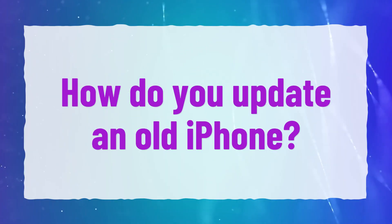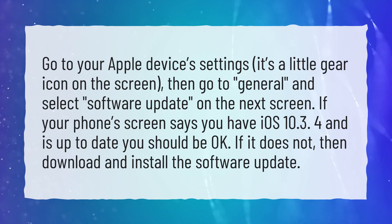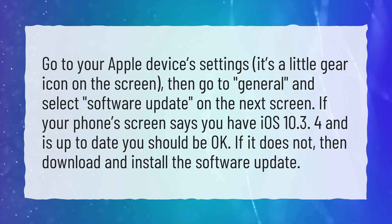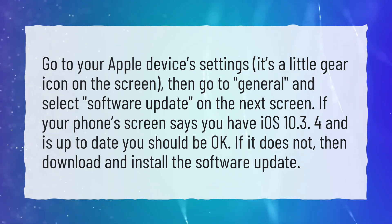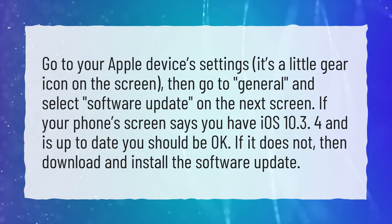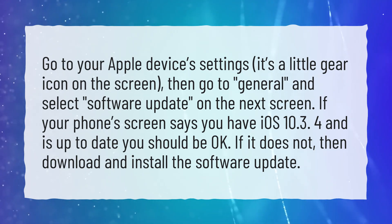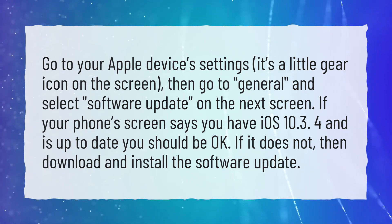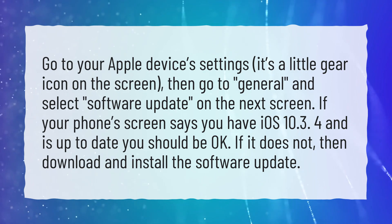How do you update an old iPhone? Go to your Apple device's settings — it's a little gear icon on the screen — then go to General and select Software Update on the next screen. If your phone's screen says you have iOS 10.3.4 and is up to date, you should be okay. If it does not, then download and install the software update.